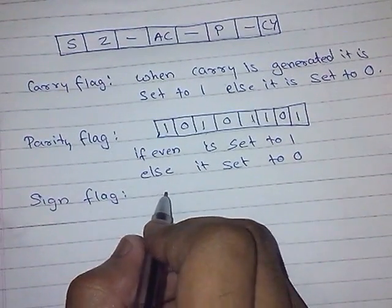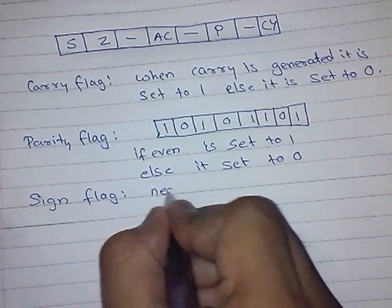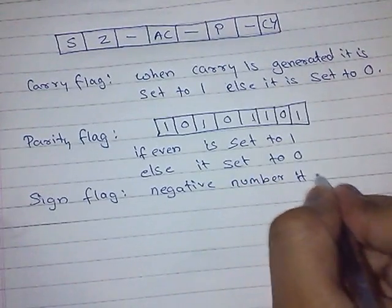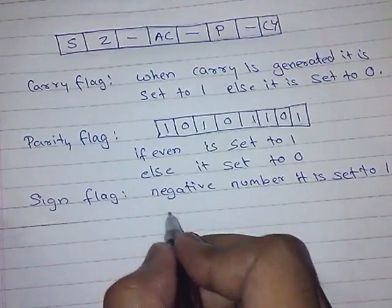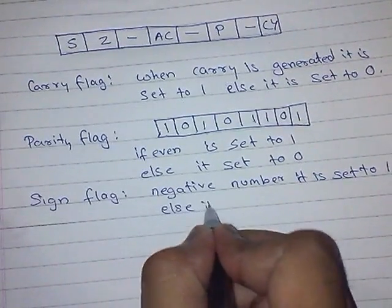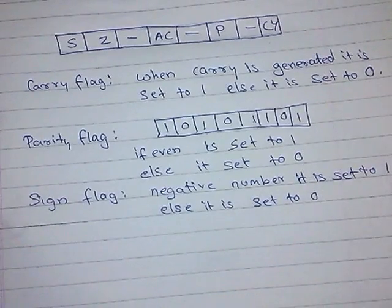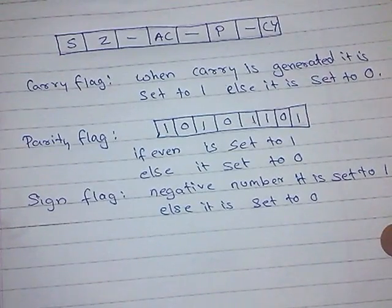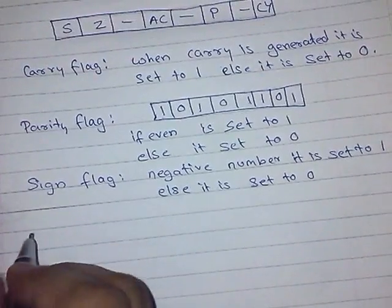In sign flag, when there is a negative number, it is set to 1, or else it is set to 0. For positive 2, suppose the number is positive 2 then it will set to 0, and if it is negative 2 then it will set to 1. Next flag is auxiliary carry flag.